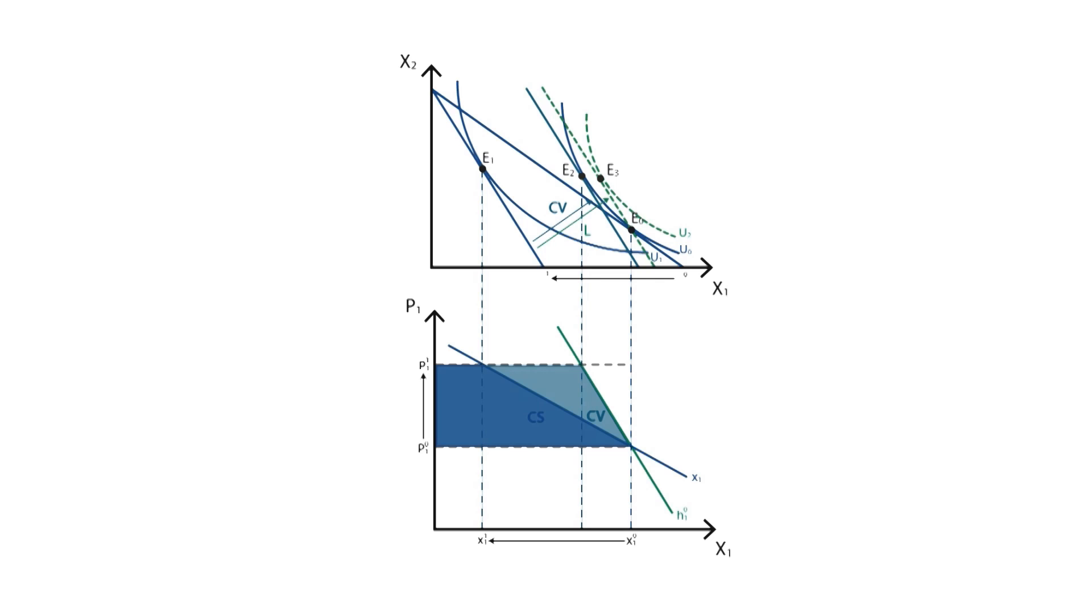As a result, we can see how the Laspeyres index overestimates this compensated variation. It assumes that inflation has a greater effect than it does. This can be more clearly seen in the bottom graph. The green rectangle shows the Laspeyres effect associated with this, which is greater than the compensated variation.